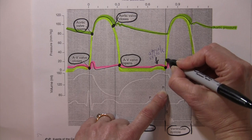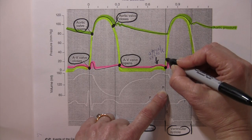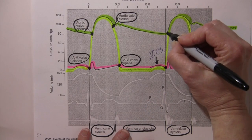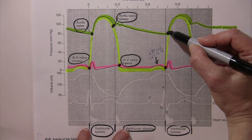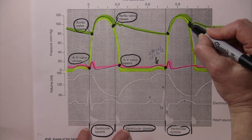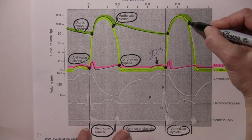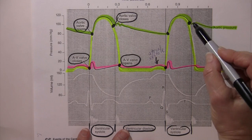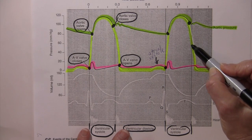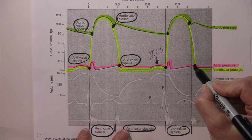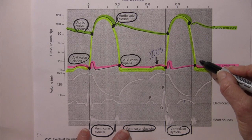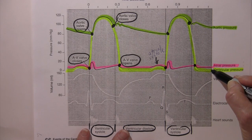At that point in time, when ventricular pressure exceeds atrial pressure, that's going to close the AV valves. Ventricular pressure increases, meets blood vessel pressure, exceeds blood vessel pressure — that opens the semilunar valves and blood is ejected from the heart. When ventricular pressure drops below blood vessel pressure, semilunar valves close, blood crashes against those closed semilunar valves, and ventricular pressure continues to decrease. When ventricular pressure goes below atrial pressure, the AV valves open and blood passively fills the ventricles.